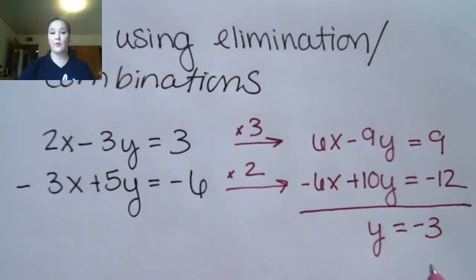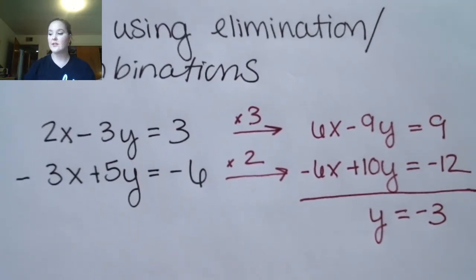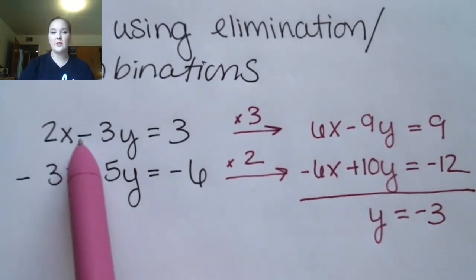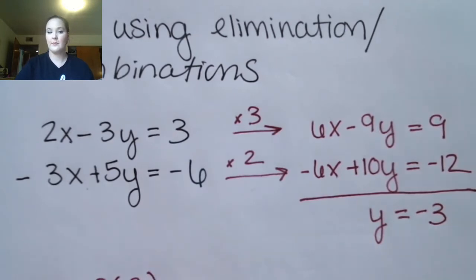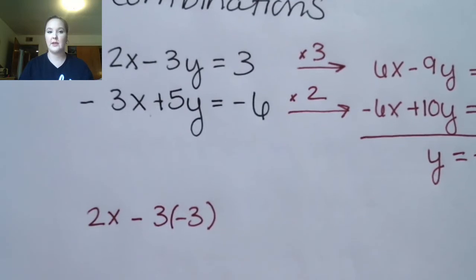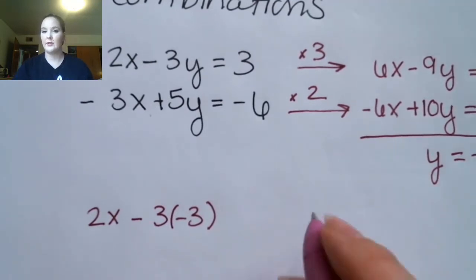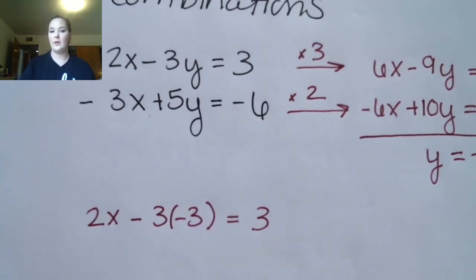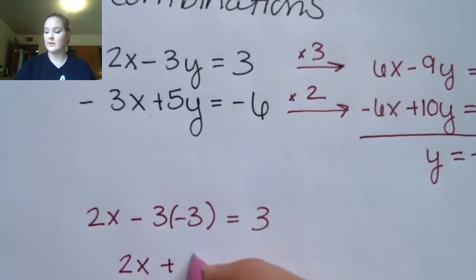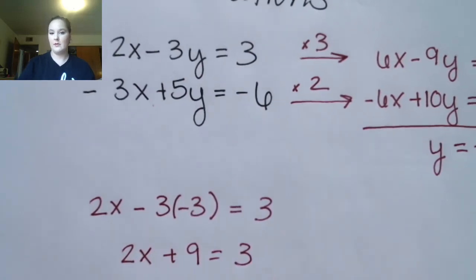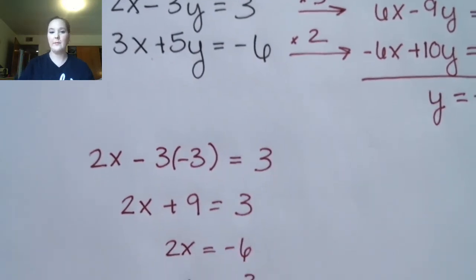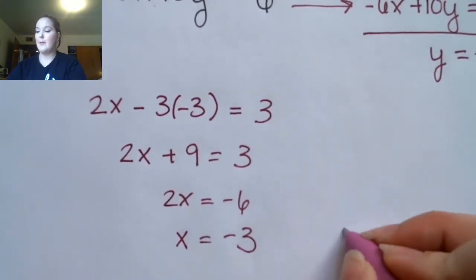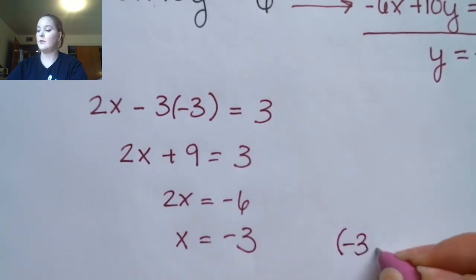Now we have a value for y, and we just need to get a value for x by plugging this in. You could plug it into either one of these equations — it absolutely doesn't matter. I'm going to use the first one, plugging into 2x minus 3y with my y value of negative 3. This gives me 2x plus 9 equals 3, so x is also negative 3. My formatted answer is negative 3 comma negative 3.